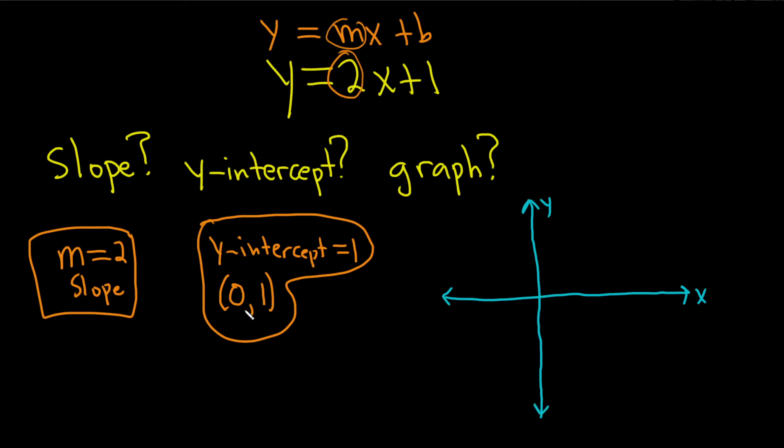Okay, and we'll start at the y-intercept, so 0, 1. So when x is 0, y is 1, so we're here. And now we're going to use the slope.